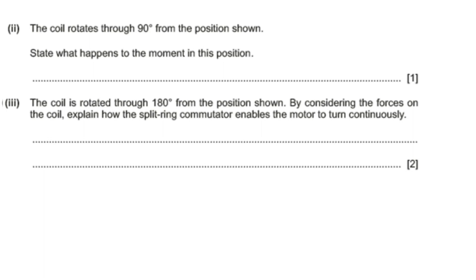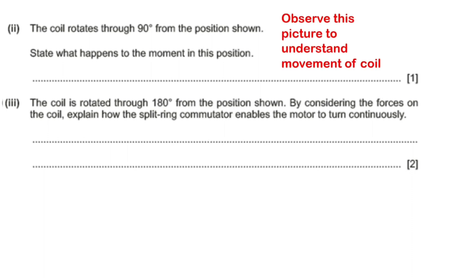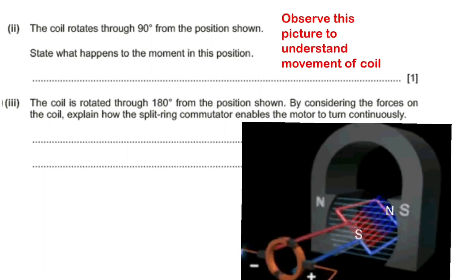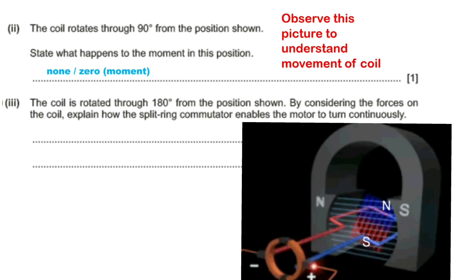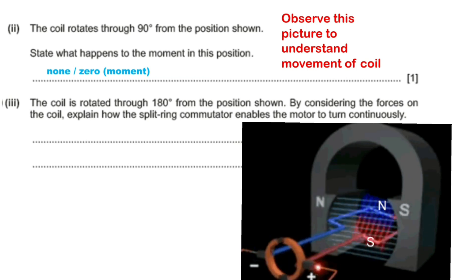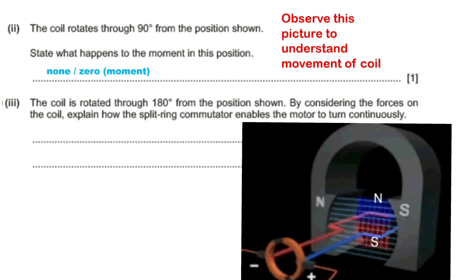The next part of the question: the coil rotates through 90 degrees from the position shown — state what happens to the moment in this position. Observe the picture to understand the movement of the coil. When the coil is at 90 degrees, there will be no moment, or zero moment.